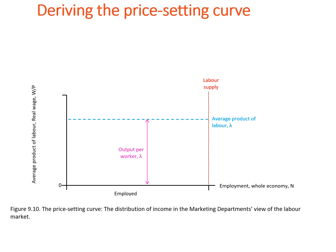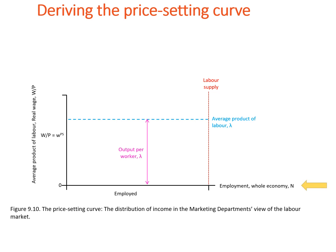This figure shows the outcome of the firm's decision with respect to price setting in the whole economy. On the y-axis, we have the real wage, which is the nominal wage divided by the economy-wide price level, capital P. On the horizontal axis, we have employment in the whole economy.